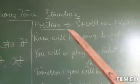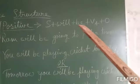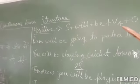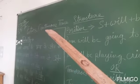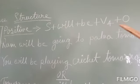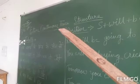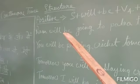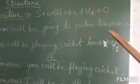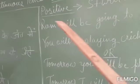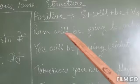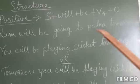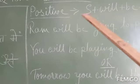The positive structure is: subject plus will plus be plus V4 plus object. Whenever we are talking about the continuous form structure, we have to use the V4th form. When there is a continuous word, we will always use V4th form. For example: Ram will be going to Patna tomorrow.